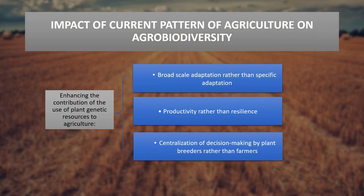The focus of efforts in recent decades has been on enhancing the contribution of plants and genetic resources to agriculture, emphasizing productivity rather than resilience, and broad-scale adaptation rather than specific adaptation. There has been substantial investment in breeding for resistance to biotic and abiotic stresses. At the same time, centralization of decision-making has shifted to plant breeders rather than farmers.